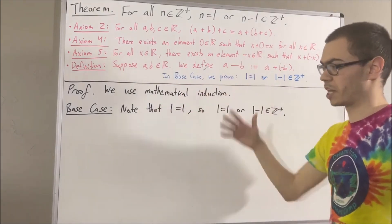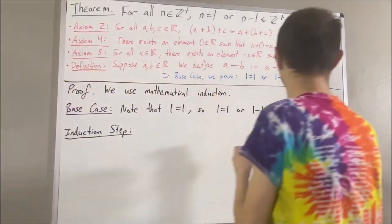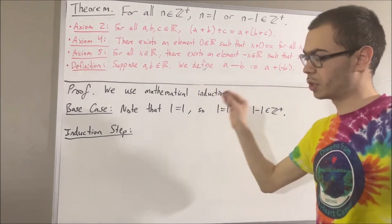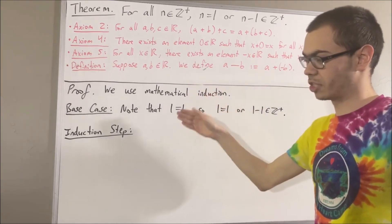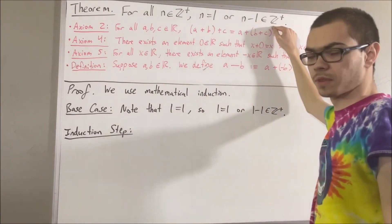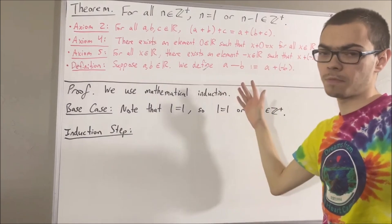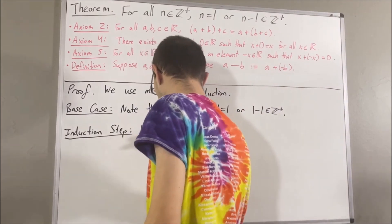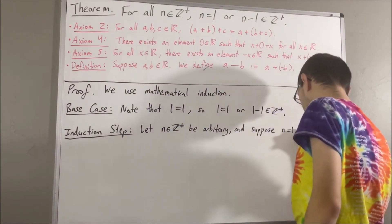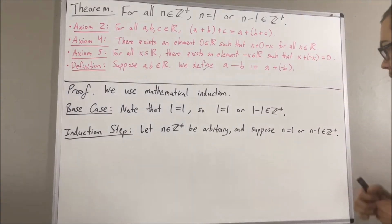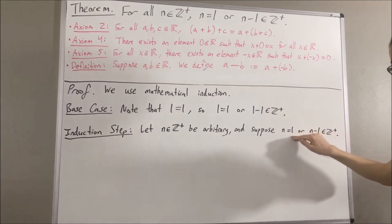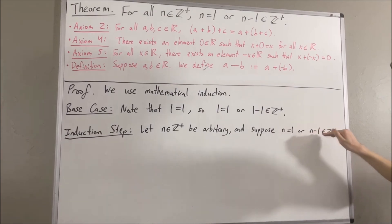Now, let's move on to the induction step. In the induction step, we give ourselves an arbitrary positive integer, and we assume, with that arbitrary positive integer, we have that this statement is true. So, let n be an arbitrary positive integer, and suppose that n is equal to 1, or n minus 1 is a positive integer. The whole goal of the induction step is to show that this is also true for n plus 1 — that is, n plus 1 is equal to 1, or n plus 1 minus 1 is a positive integer.